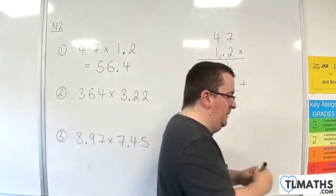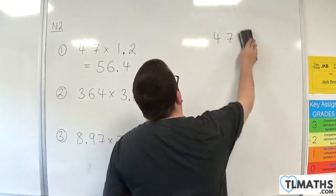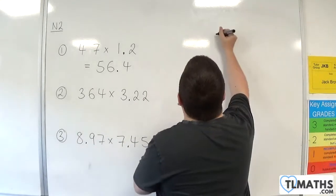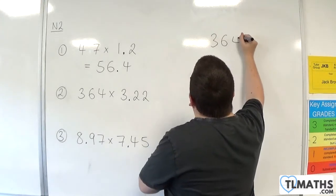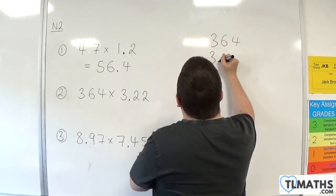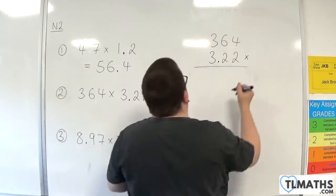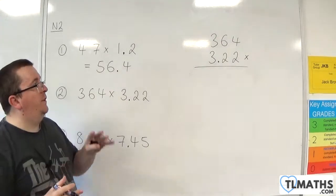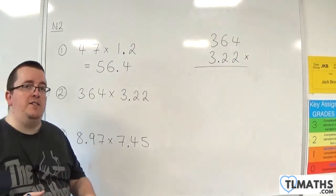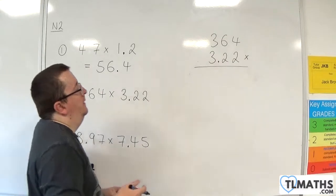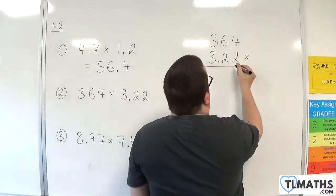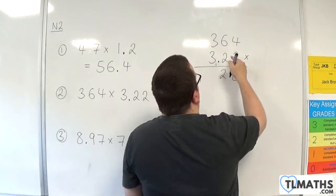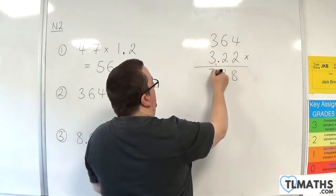Let's take a look at example number 2. We have 364 times 3.22. Again, ignore the decimal point, so think of it as 364 times 322. We'll deal with the decimal point at the end. So 2 times 4 is 8. 2 times 6 is 12. Put down the 2, carry the 1. 2 times 3 is 6, add on the 1 is 7.